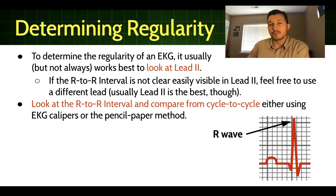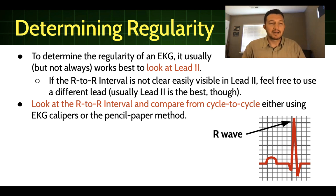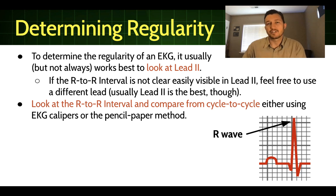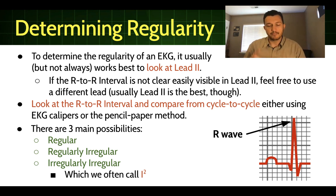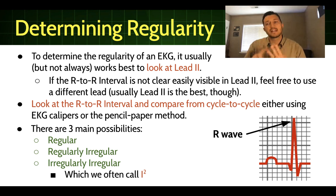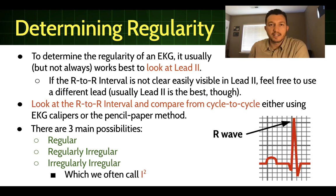We can do this using EKG calipers, which look a little bit like a compass tool, but an even simpler method is the paper-pencil method. What we're trying to determine when we determine regularity is: is this rhythm regular, meaning it marches out consistently; is it regularly irregular; or is it irregularly irregular? Let me take a minute and show you on an actual EKG what this looks like using the paper-pencil method, which is the method I've always used.